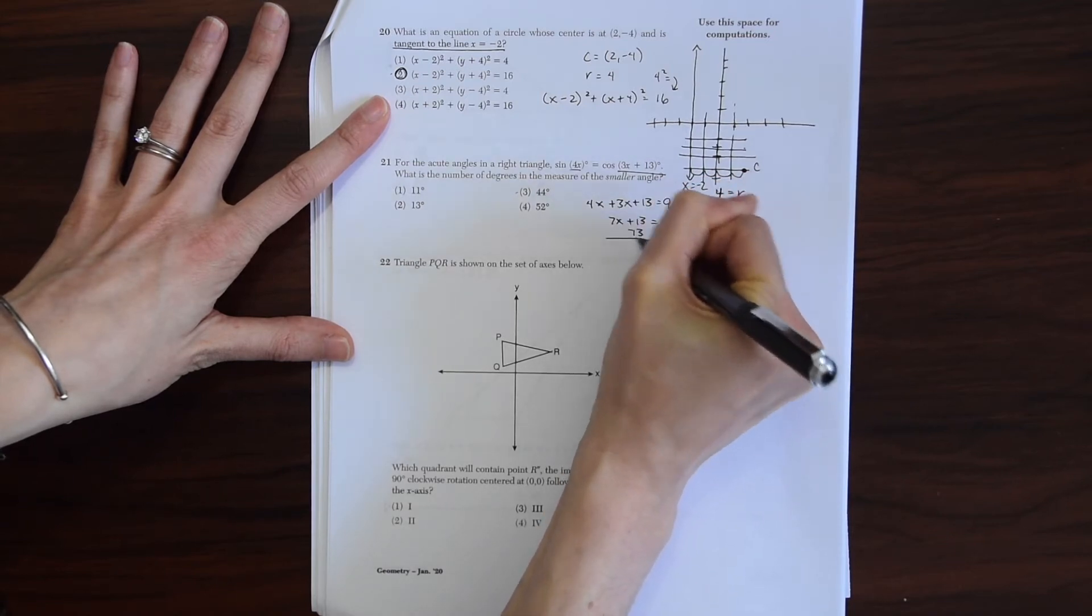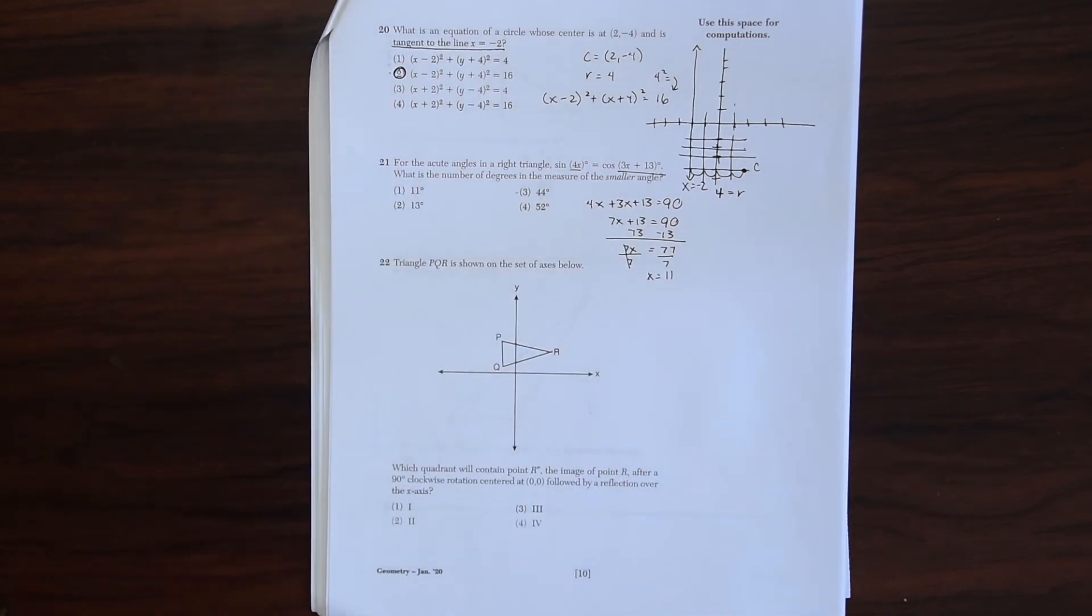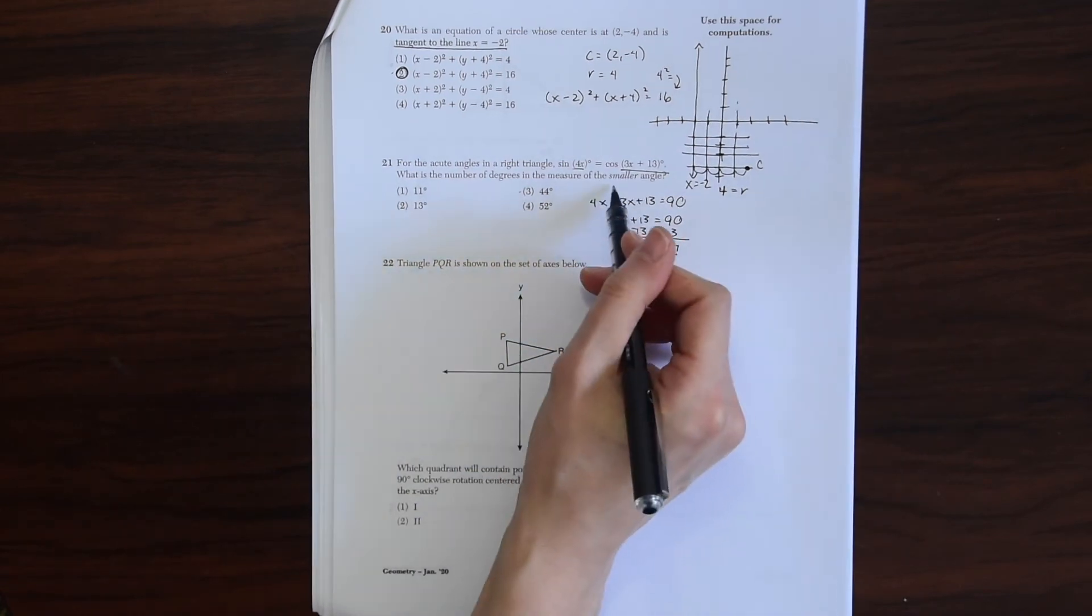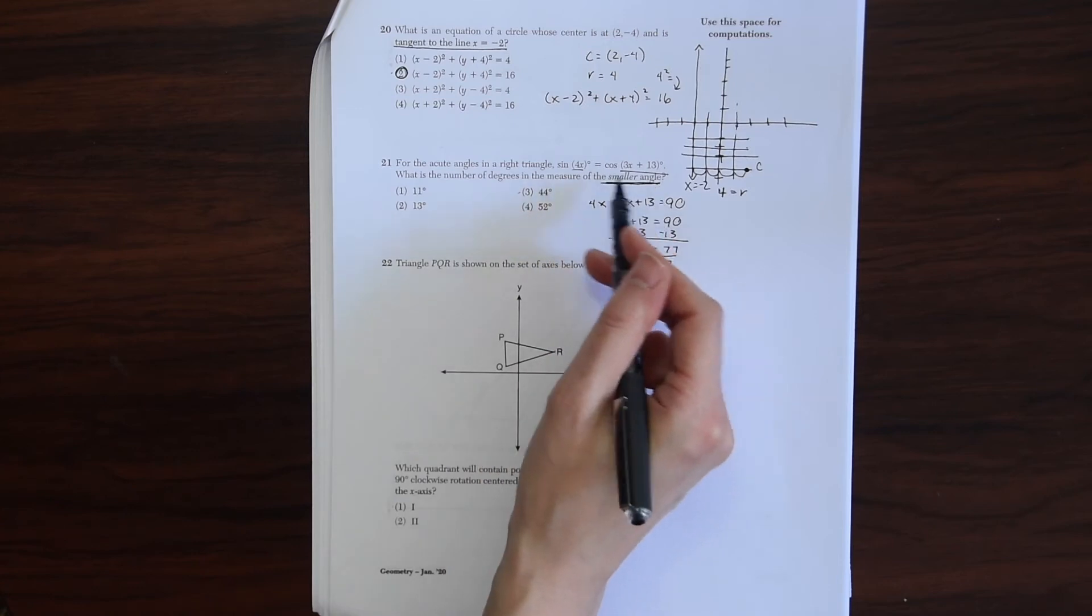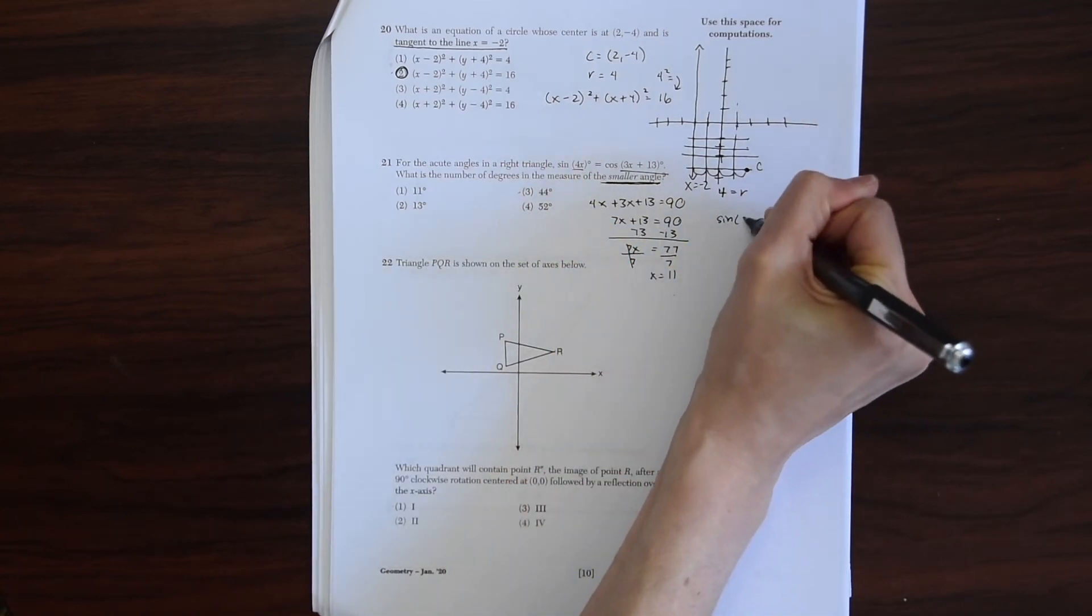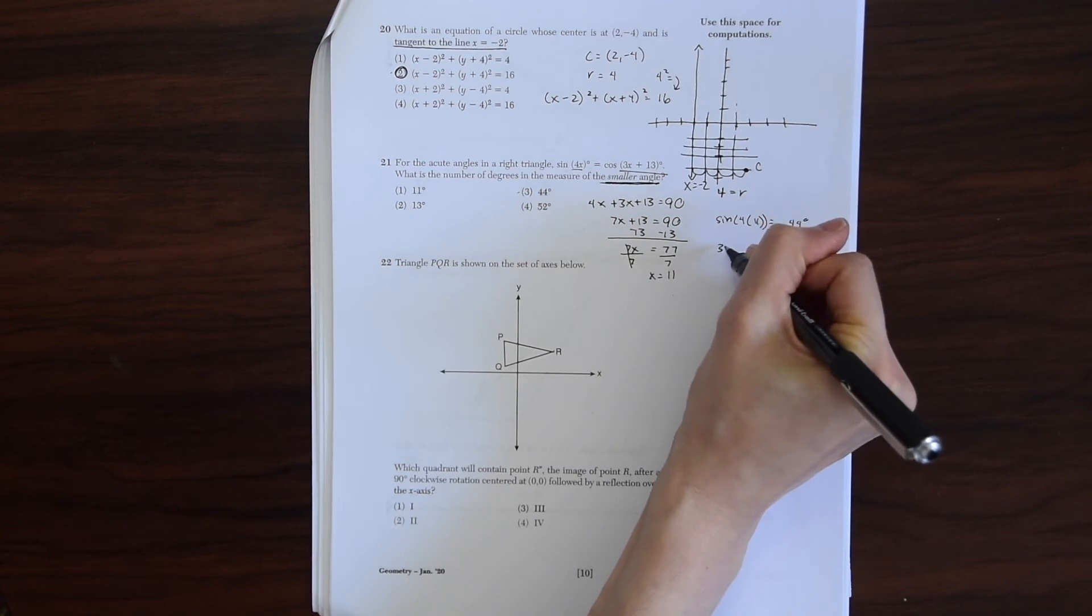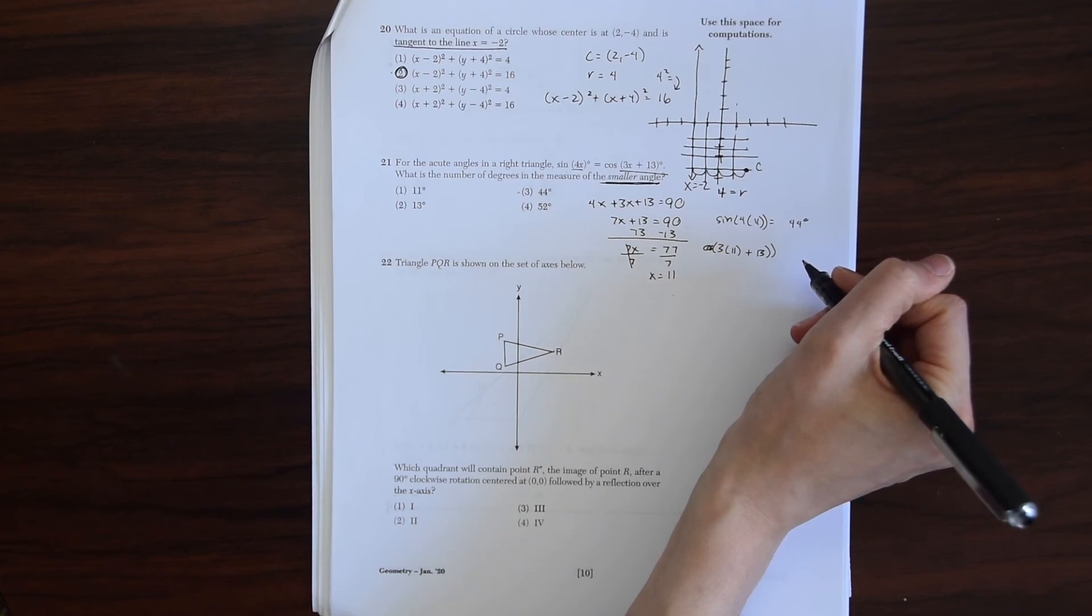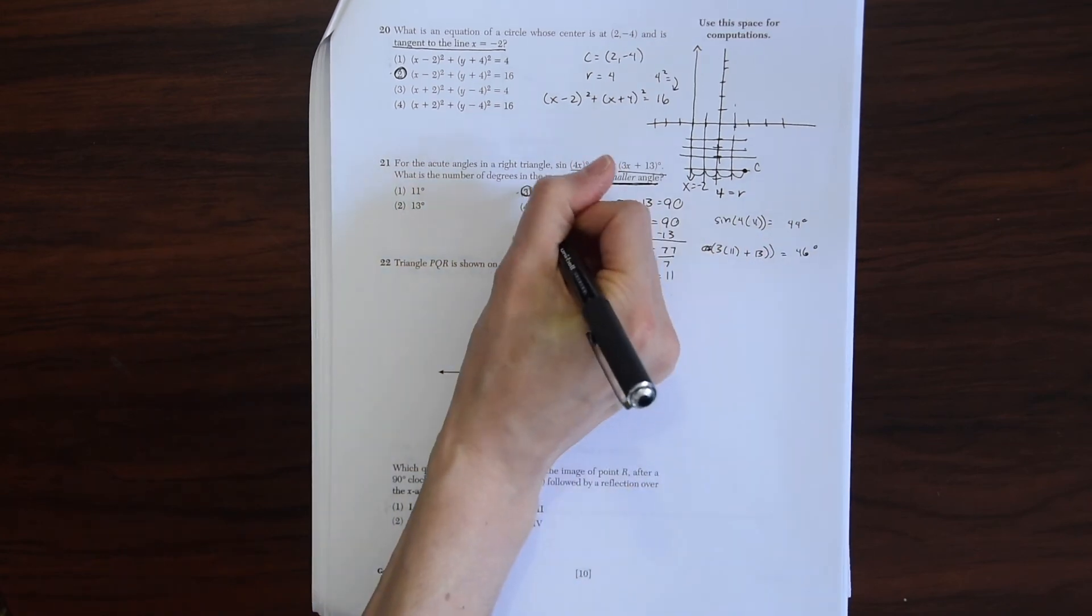Subtract 13 from both sides. This gives us 77. And we'll get x equals 11. So we're not done here. I know 11 degrees is a choice, but this is just the value of x. We're looking for the measure of the smaller angle between these two. So what we want to do is plug the value of x, 11, back into these angles. Sine of 4 times 11 will give us 44 degrees. And then we have the cosine angle 3 times 11 plus 13. This gives us 33 plus 13, which is 46 degrees. We're looking for the smaller angle between the two, which is 44 degrees. Choice 3. That's our answer.